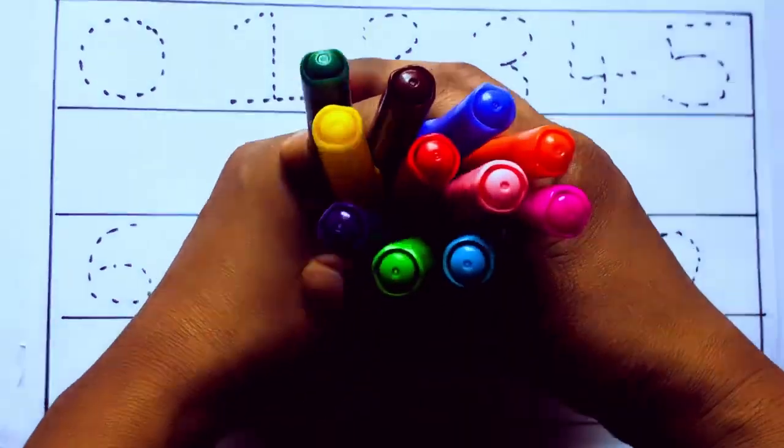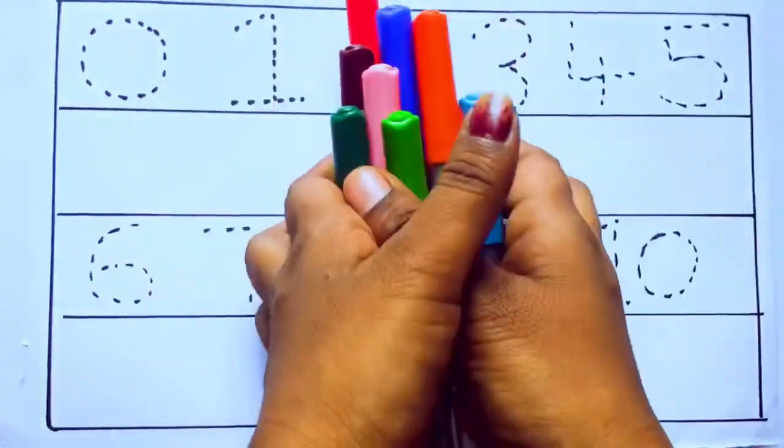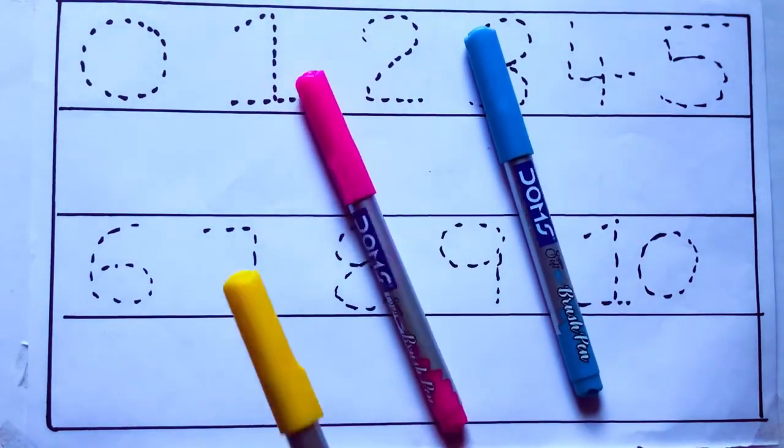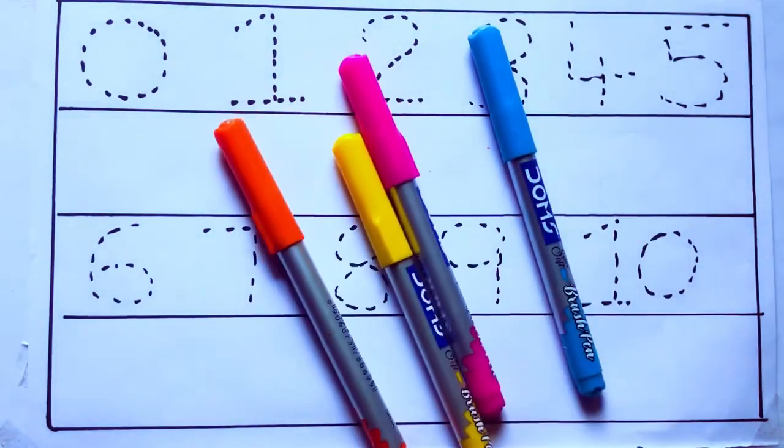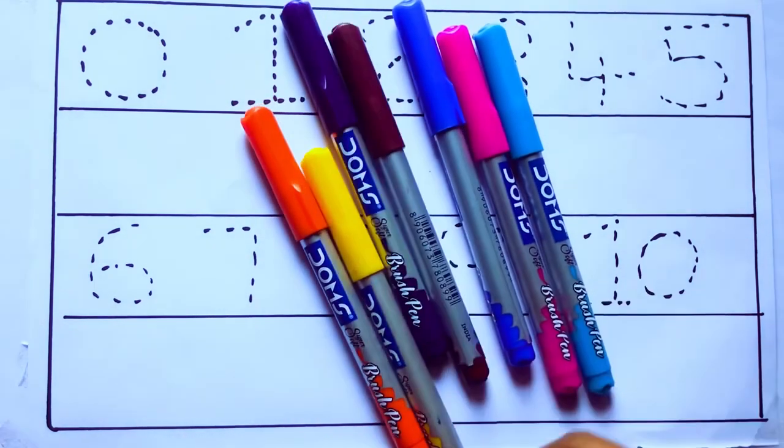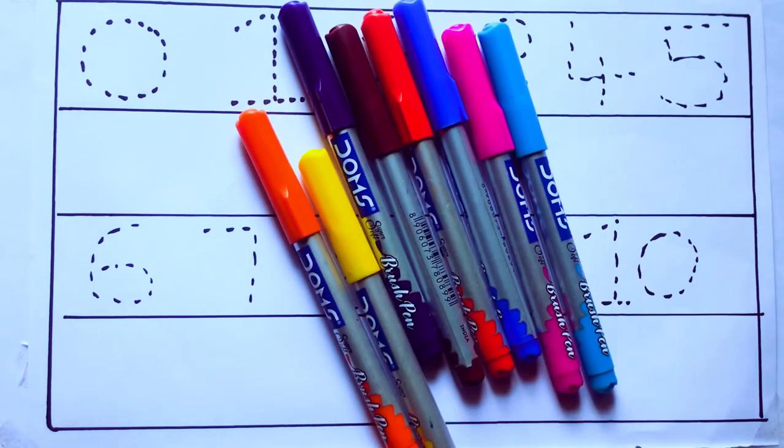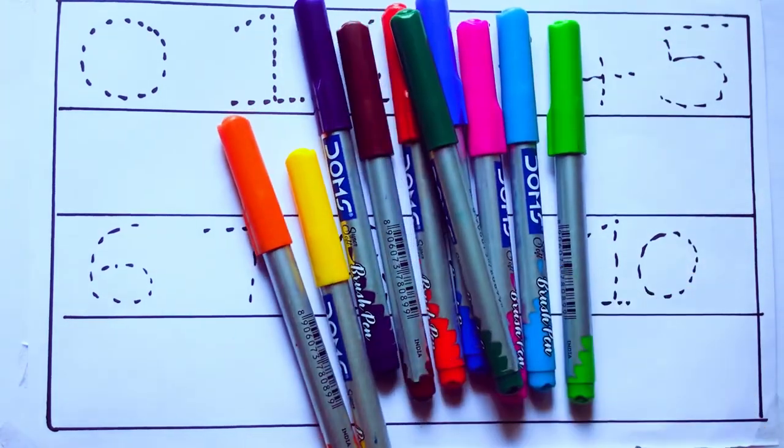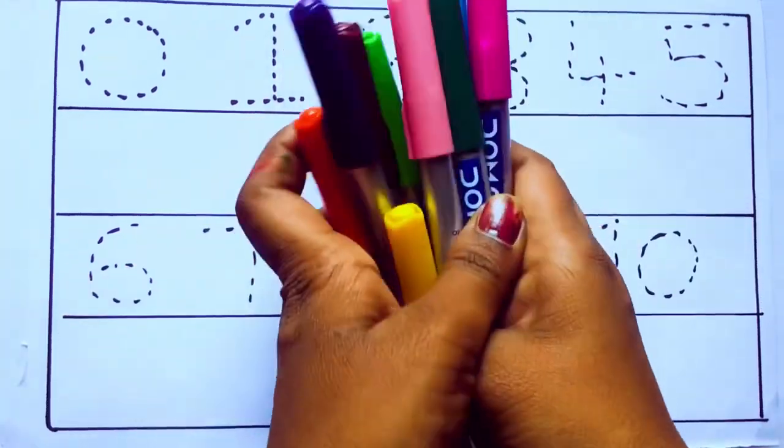Let's learn some colors. These are all the color pencils. Let's learn the names. Sky blue color, pink color, yellow color, orange color, violet color, blue color, brown color, red color, green color, and pink color.